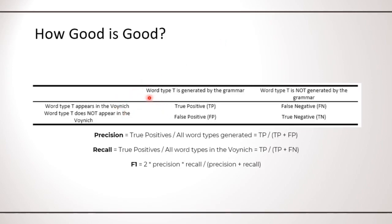So this table above shows that we can have four possible cases. We can have a word type that appears in the Voynich and is also generated by the grammar. It's a true positive. If it is not generated by the grammar, it's a false negative. And on the converse, if the word type does not appear in the Voynich but is generated by the grammar, it's a false positive. And if it's not generated by the grammar, then it's a true negative.